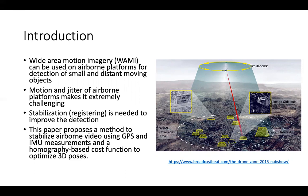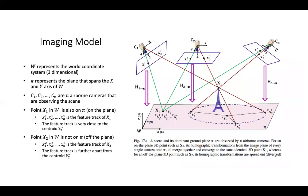This process is very difficult because of the motion and jitter of the airborne platform, and stabilization, also known as registering, is needed to improve the detection. So this paper proposes a method to stabilize airborne video using GPS coordinates and IMU measurements along with a homography-based cost function to optimize the 3D poses.